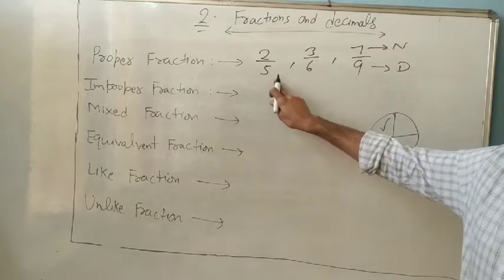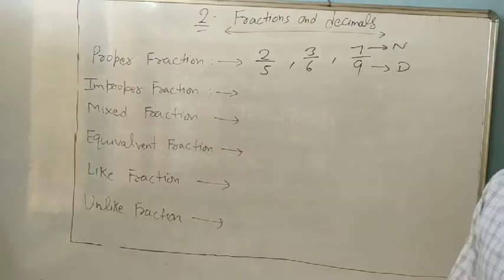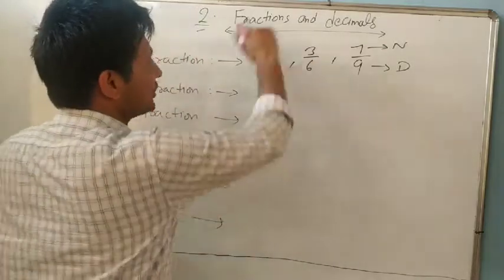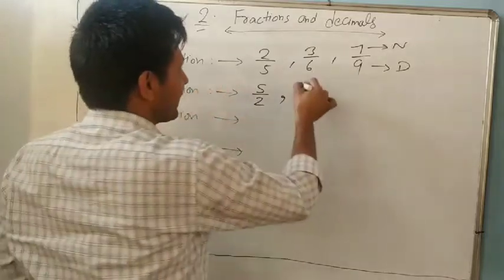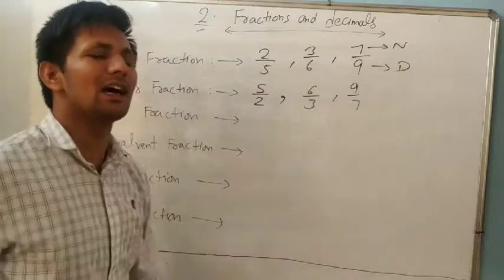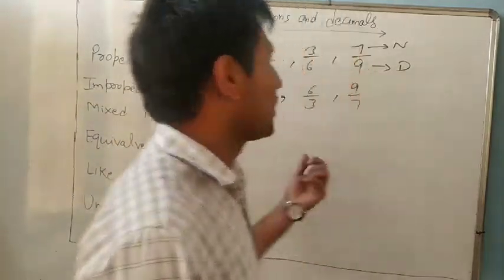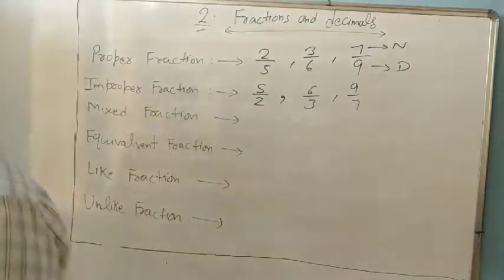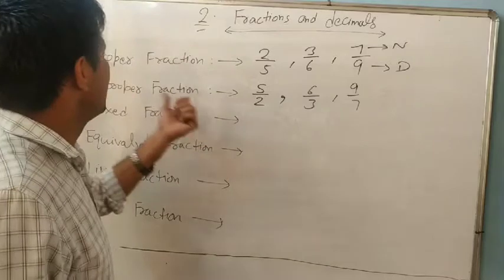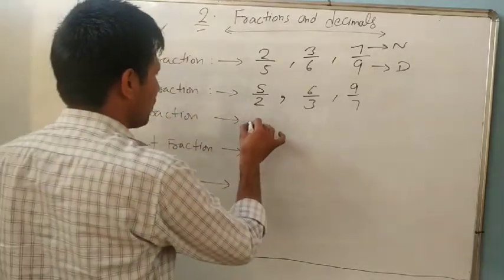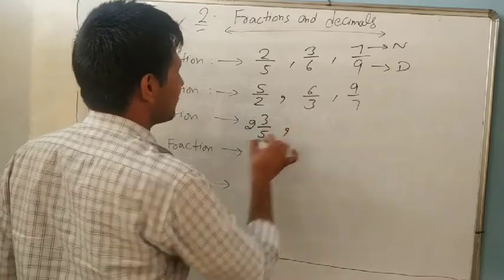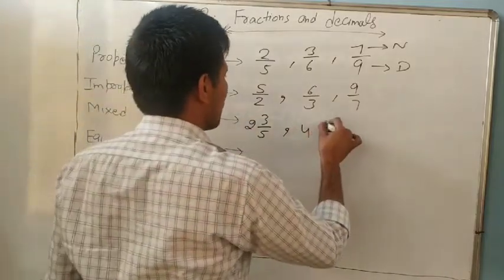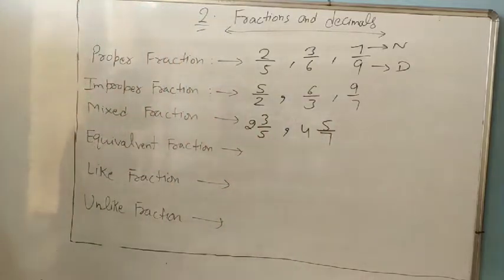An improper fraction means when the numerator is greater than the denominator — the opposite of a proper fraction. Examples: 5/2, 6/3, 9/7. An improper fraction represents a whole and a part. A mixed fraction is a combination of a whole number and a proper fraction — for example, 2 and 3/5, which equals (5×2 + 3)/5 = 13/5.